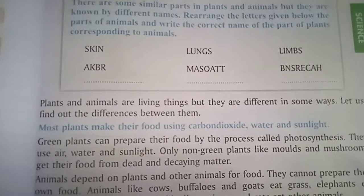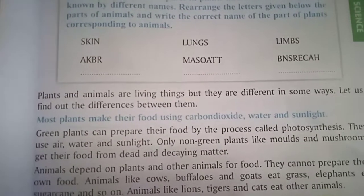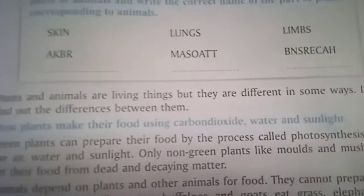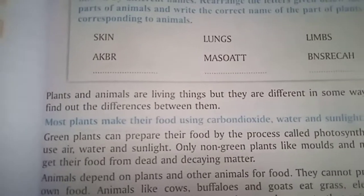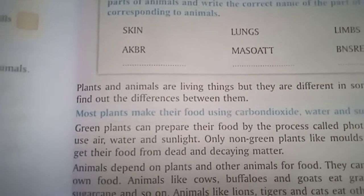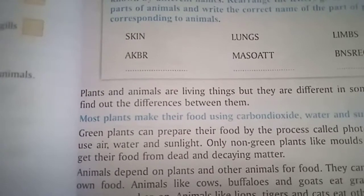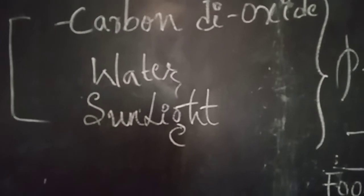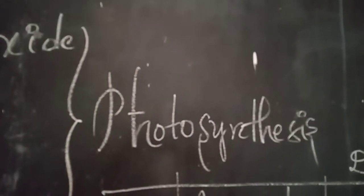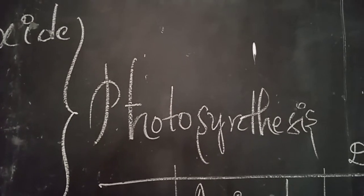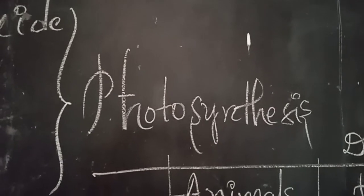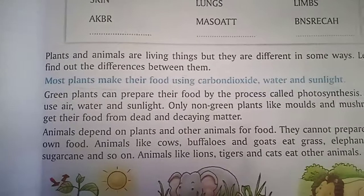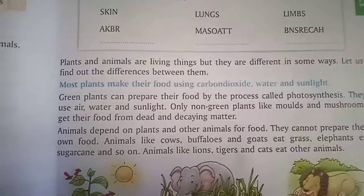Most plants make their food using carbon dioxide, water, and sunlight. Plants use these three things to prepare food. This process is called photosynthesis. Green plants can prepare their own food by the process called photosynthesis.